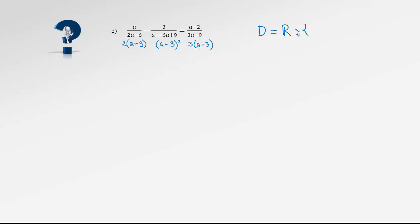Factoring the denominators helps us find the domain and is also useful for the upcoming LCD multiplication and canceling. The number we must exclude from the domain is 3 — it appears in all three factored denominators. So the domain is all real numbers except for 3.